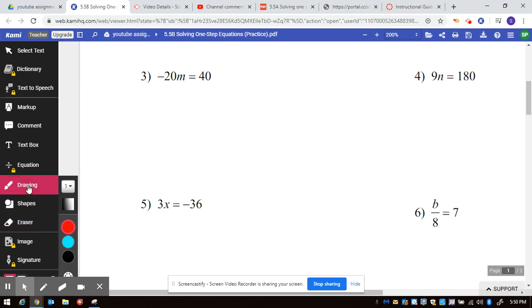Remember that whenever you're solving one-step equations, your line down the middle is like your equal sign. You have to do the opposite operation. This is negative 20 times m, so the opposite of multiplying, and I know it's multiplying because they're touching,